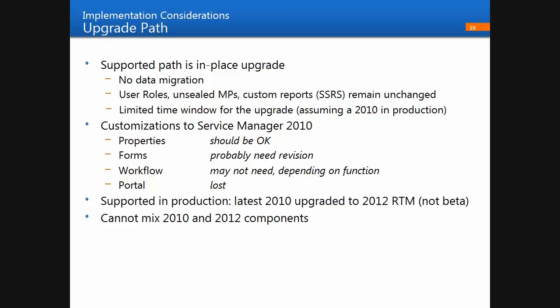Now for implementation considerations. The supported upgrade path is an in-place upgrade. Because it's in-place, you won't need to migrate data, and your user roles, unsealed management packs, and custom reports published to SSRS will remain unchanged. The challenge with an in-place upgrade for a production system is that you'll have a limited time window, so there are considerations around planning, risk, and the upgrade approach. Customizations depend on the type: schema extensions — adding properties to existing classes or creating new classes — should survive the upgrade, with some potential exceptions for naming conflicts.